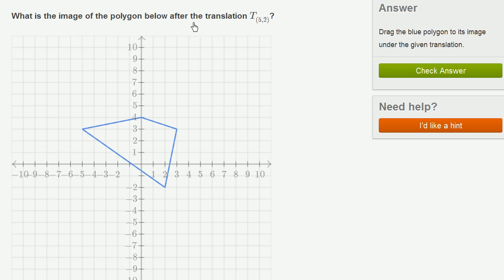What is the image of the polygon below after the translation T with subscript 5 comma 2? So that means let's translate 5 in the horizontal direction and 2 in the vertical direction. So let's do that. I'm going to focus on this point right over here. That point is at 3 comma 3.